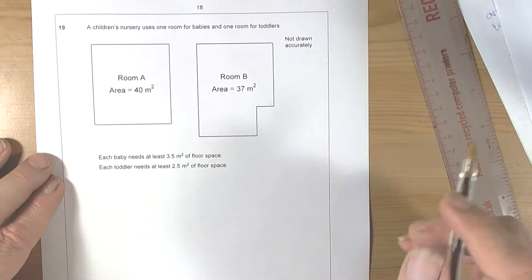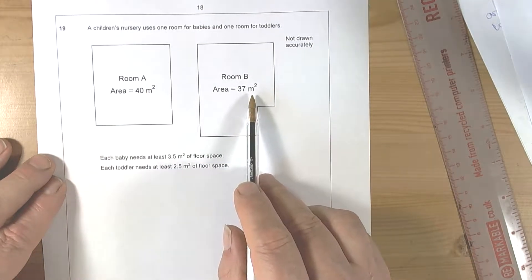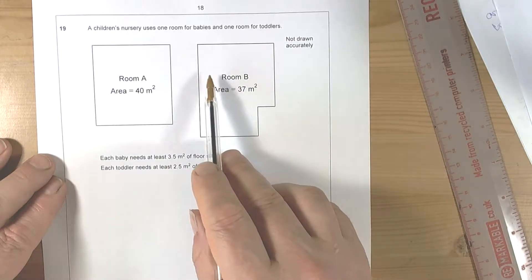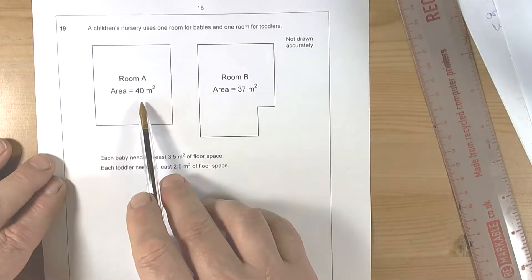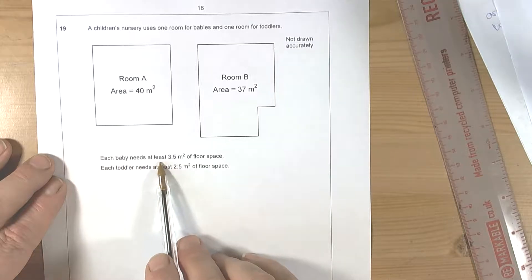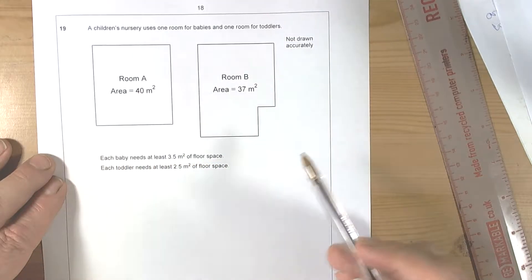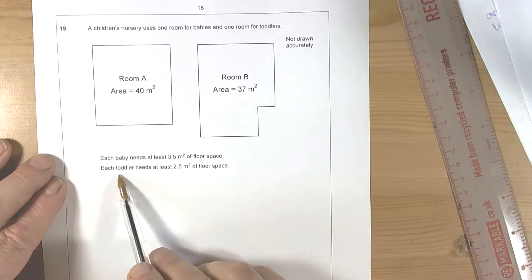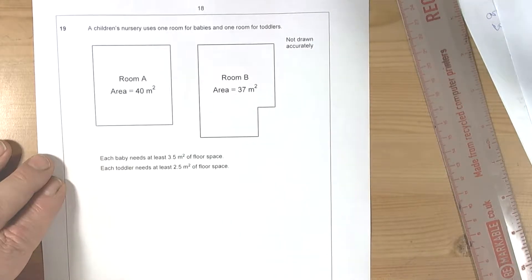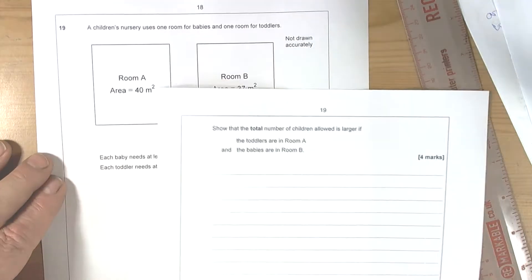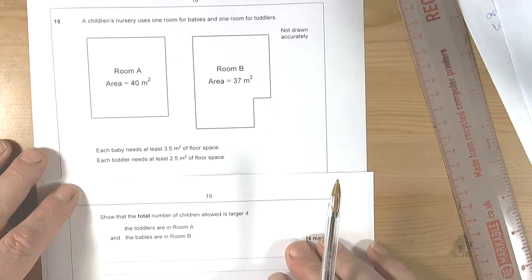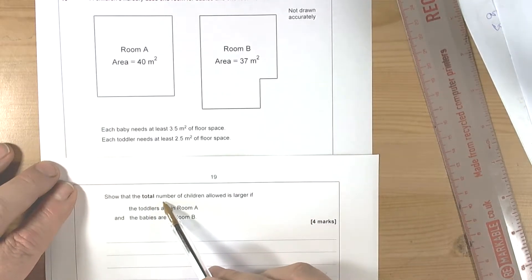Okay, so we've got a question here working with the area of rooms. Each baby needs at least three and a half square meters of floor space, and each toddler needs two and a half square meters of floor space. The question says show that the total number of children allowed is larger if the toddlers are in room A and the babies in room B.